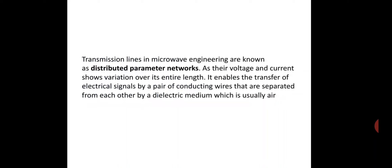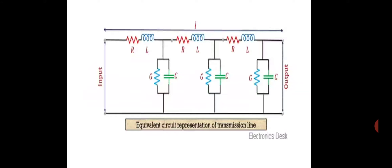It enables the transfer of electrical signals by a pair of conducting wires separated from each other by a dielectric medium, which is usually air. In waveguides, we use a dielectric — usually air — for microwave transmission lines. The transmission line works like a circuit with a series resistor and inductor, and in parallel, both capacitor and admittance are connected. These parameters depend upon frequency.